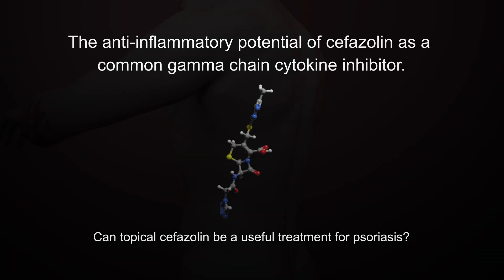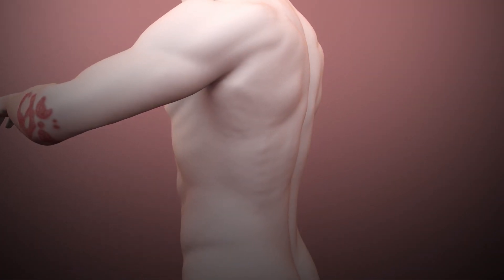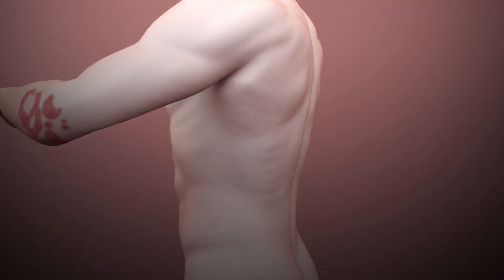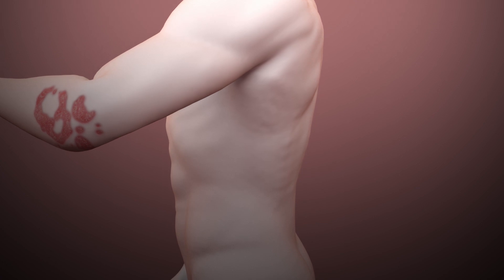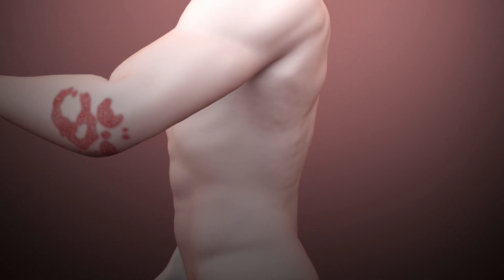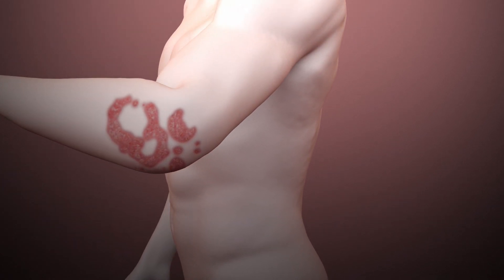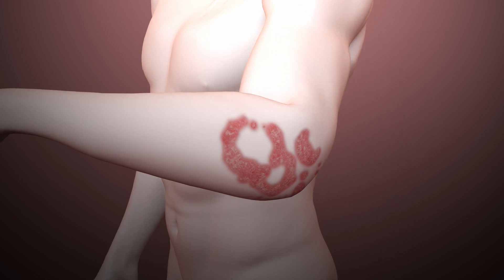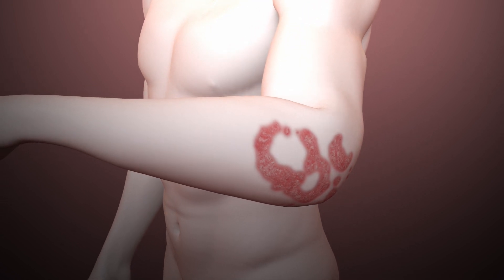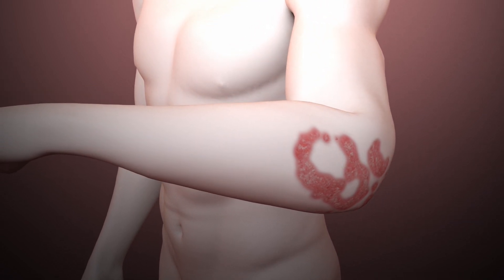Psoriasis is a complex autoimmune disease that affects the skin, forming scaly red patches, mostly at the knees, elbows, and scalp, although it can form anywhere on the body. It can also complicate conditions like heart disease, diabetes, and depression.